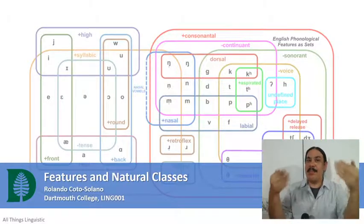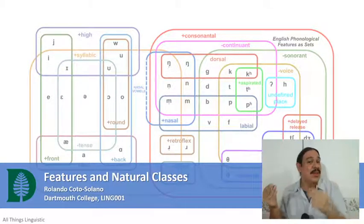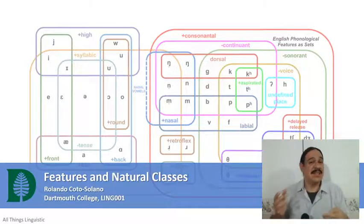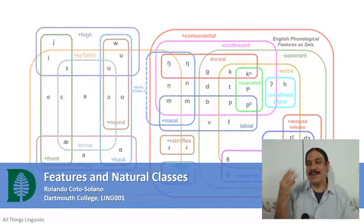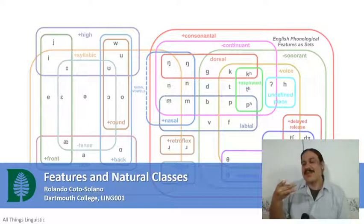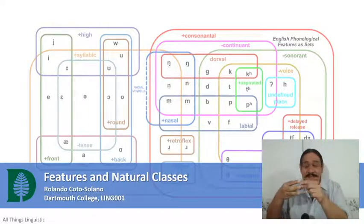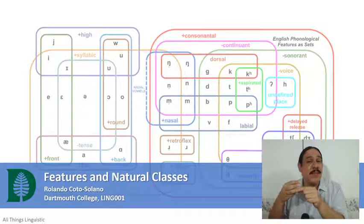We're going to take a step back from phonology and briefly go back to the phonetics content that we studied last week. As you might remember, we saw how we can describe a consonant by essentially three coordinates: its place of articulation, its manner of articulation, and whether it's voiced or not.